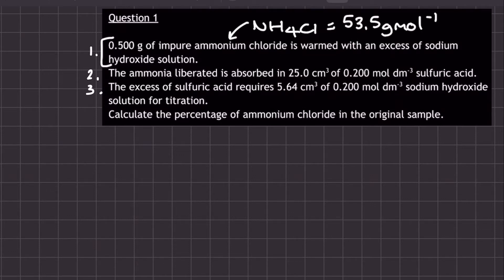Doing this reaction would produce ammonia, and the ammonia liberated is absorbed into 25 centimeters cubed of 0.2 mol per decimeter cubed sulfuric acid solution. But it turns out that that amount of sulfuric acid would actually be an excess, and in fact the excess of sulfuric acid,